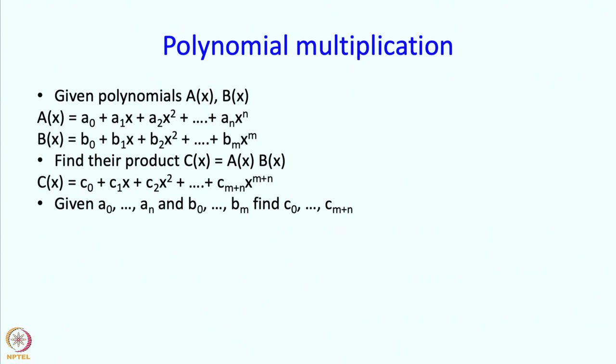So basically what is the problem? As input we are given these numbers A0, A1 all the way till An. We are also given these numbers and we are supposed to find these numbers. So we are given n plus 1 numbers, m plus 1 numbers and we are supposed to find m plus n plus 1 numbers which are these over here. So the question is how do we do that? And first where do we store these numbers?